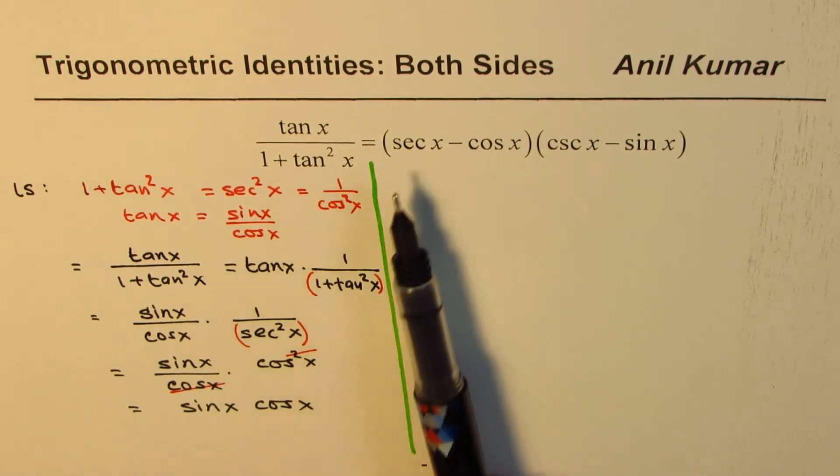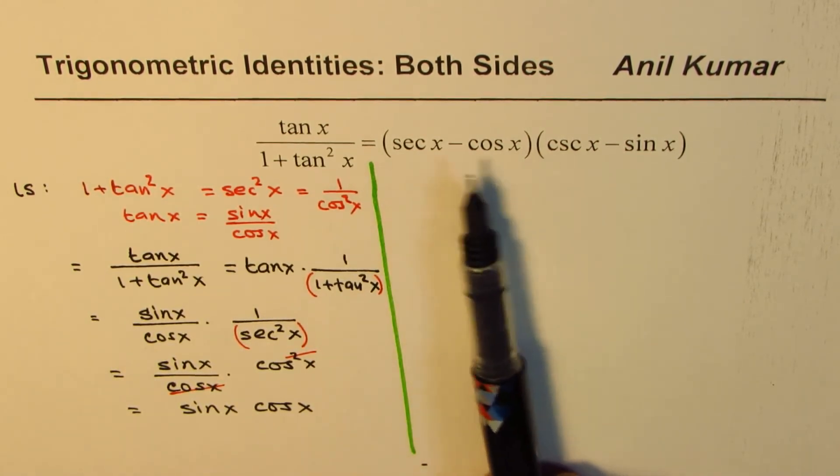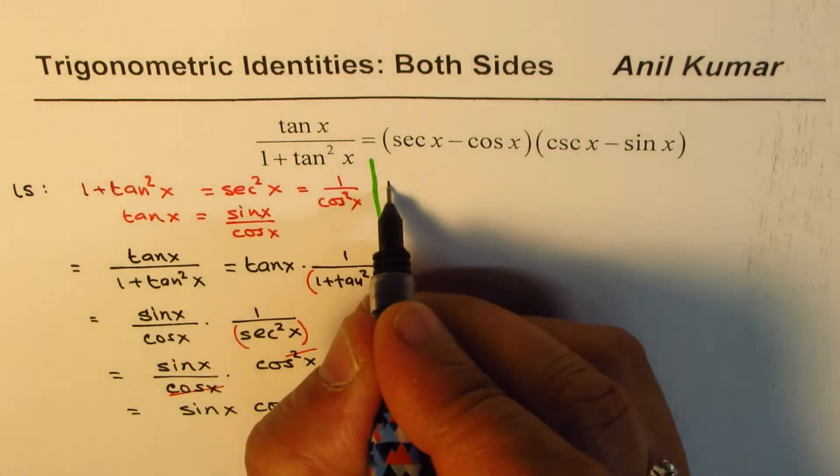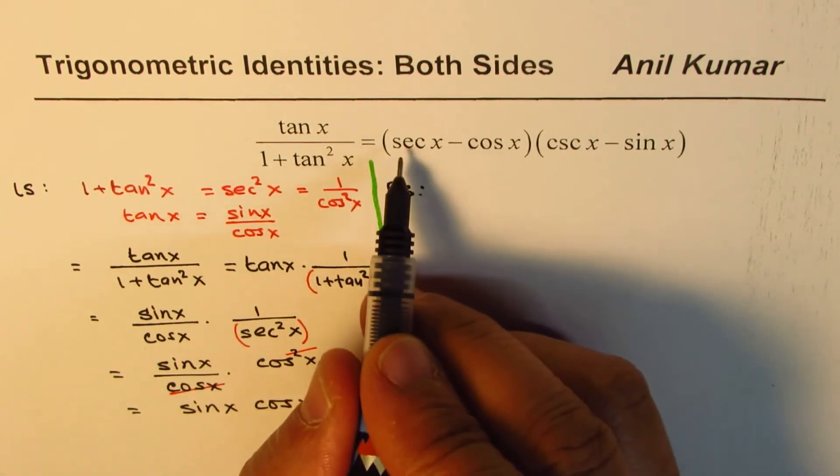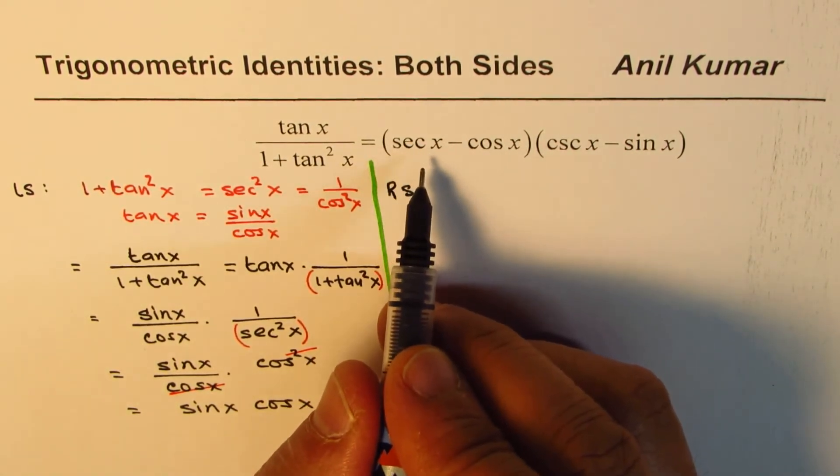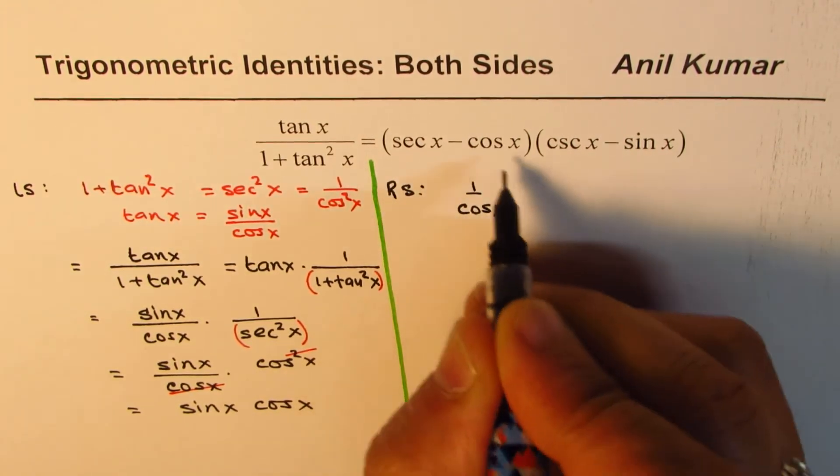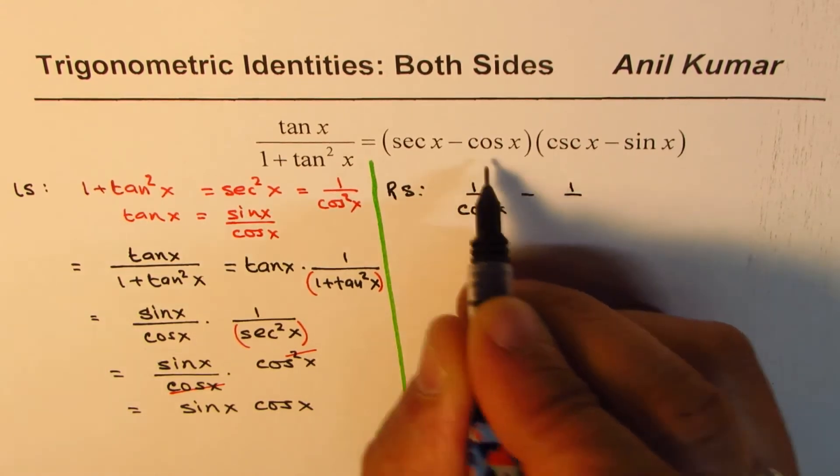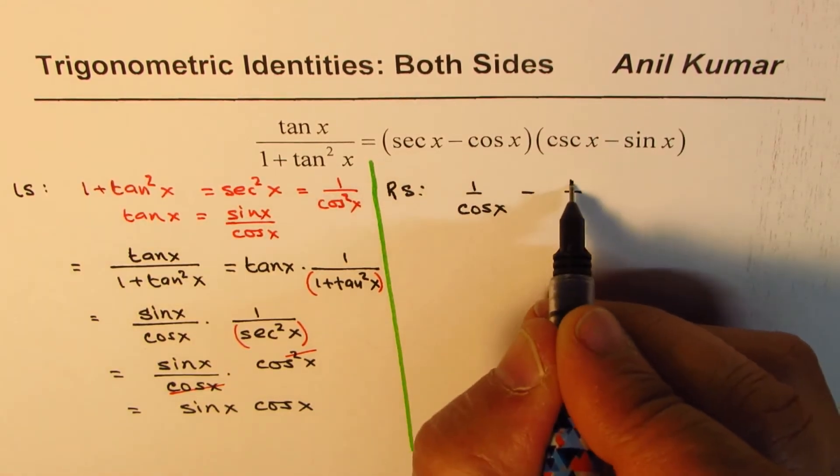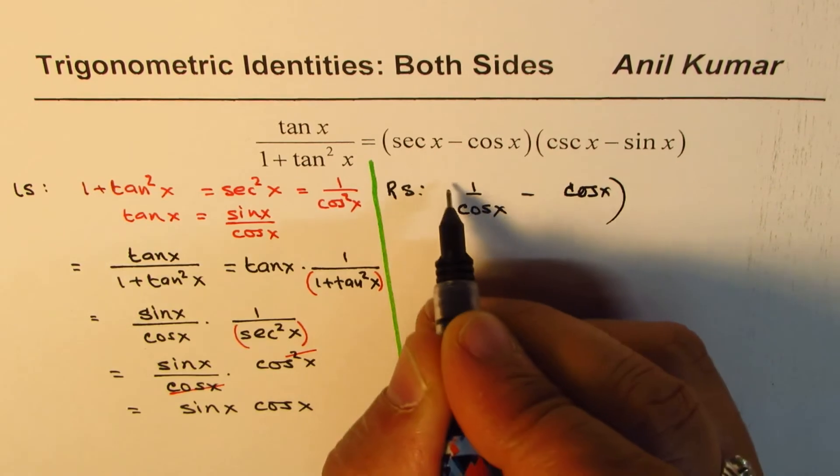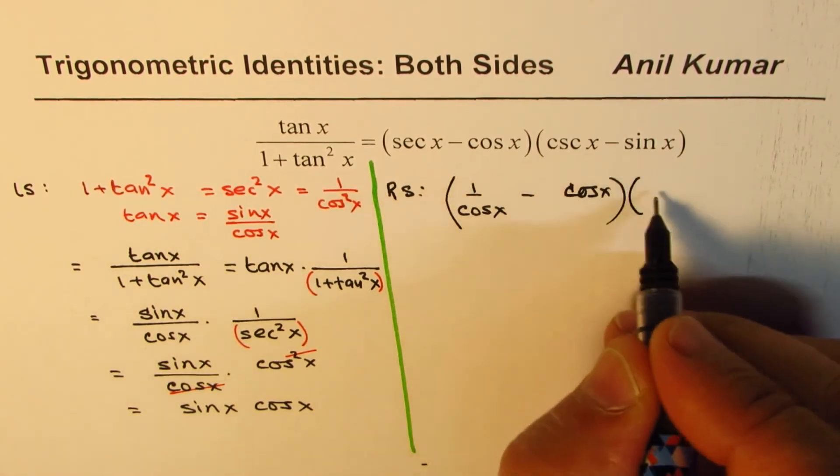Now let's simplify the right side. On the right side we'll just write these terms in terms of sine and cosine. Secant as you know is 1 over cos x, cosecant is 1 over sin x, so just cos x times cosecant is 1 over sin x minus sin x.